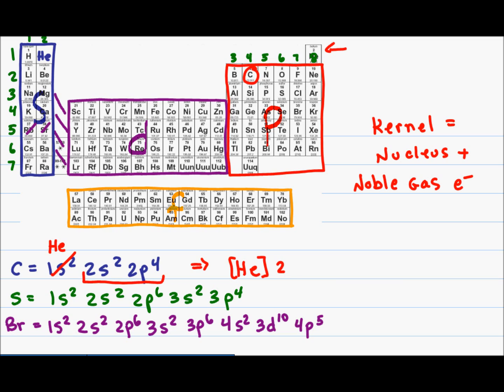Looking back at my sulfur example, the previous noble gas is neon and the outermost electrons are the 3s2 and 3p4 electrons. This entire kernel gets replaced by neon in brackets followed by 3s2 3p4.